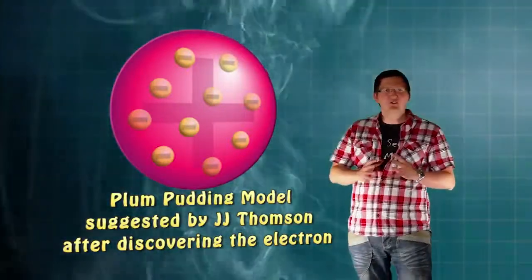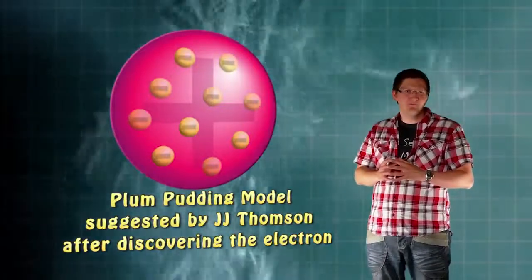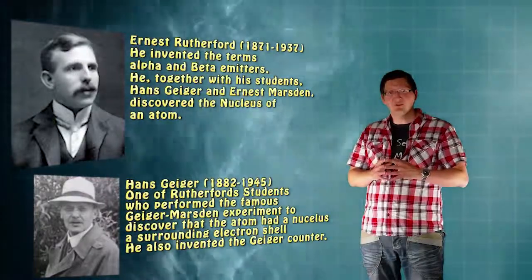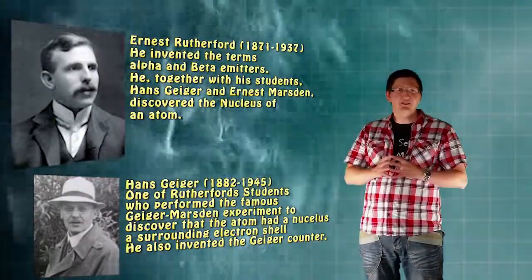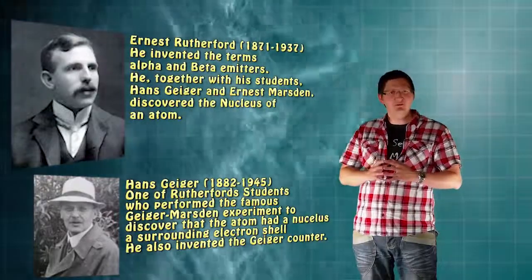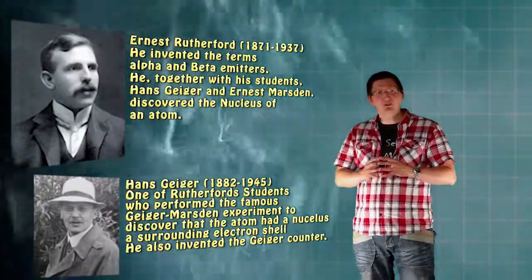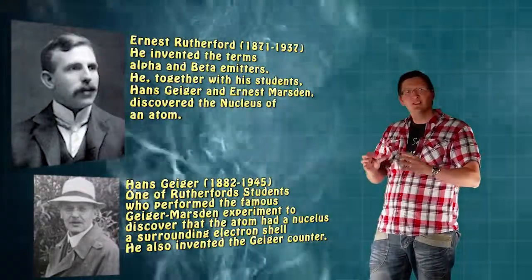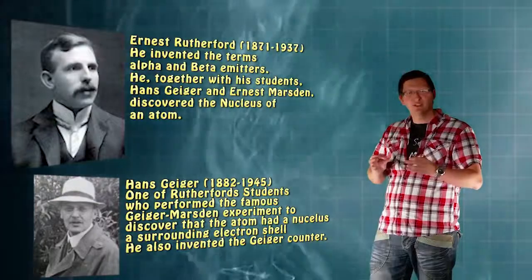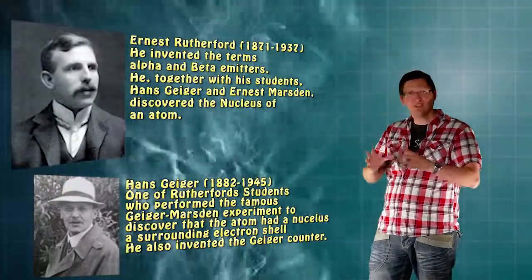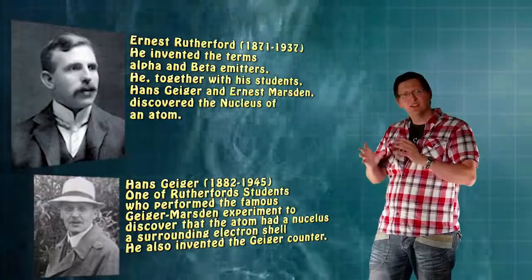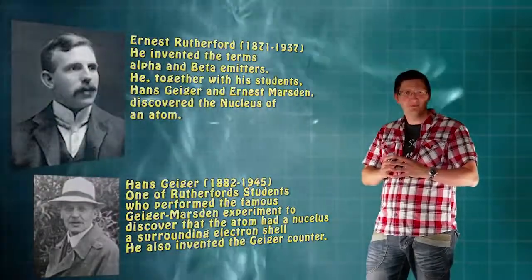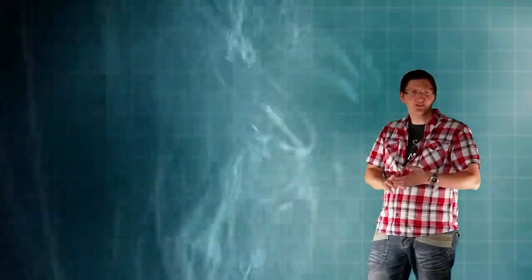One of J.J. Thomson's students was Ernest Rutherford. Ernest Rutherford went on to supersede J.J. Thomson as the head of the Cavendish Laboratory. But while I was at Manchester University, he devised an experiment where he took beta particles. Now beta particles are emitted from radioactive sources. And these beta particles are effectively, sorry, alpha particles. These are alpha particles. And these alpha particles are basically the nucleus of a helium atom. So they consist of two protons and two neutrons.